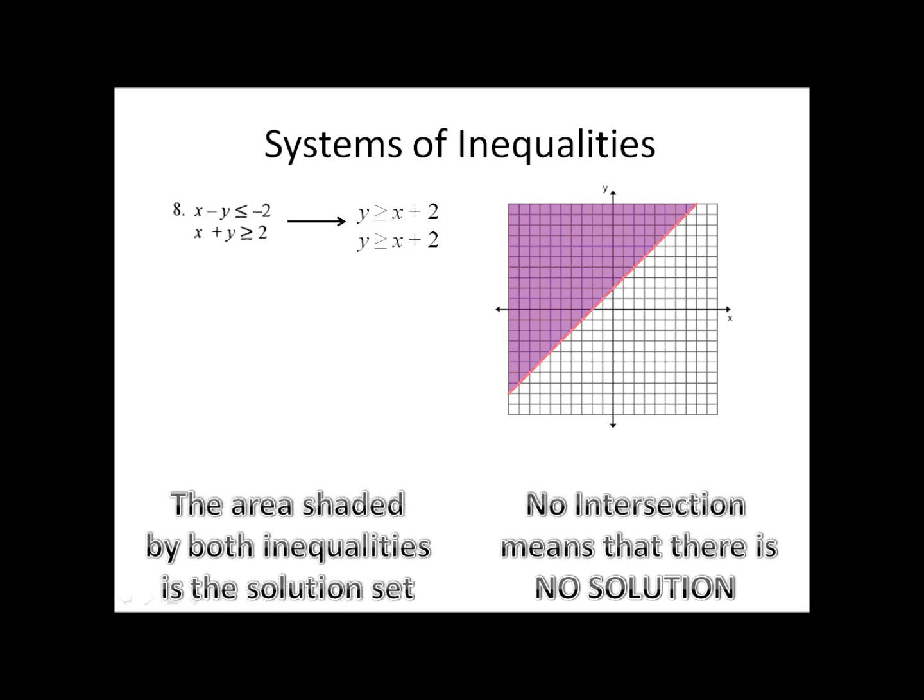Notice what happens. They're the same exact line and the same exact direction for shading. The inequalities are the same. Nonetheless, because I do have an overlapping area, that overlapping area is the solution set. Take any value in the shaded area and put it in, and it will make both of them true at the same time. I suppose that actually makes sense, because since they're the same inequality, if it makes one of them true, it clearly must make the other one true.